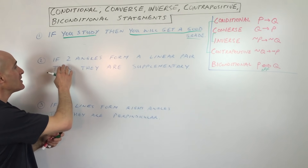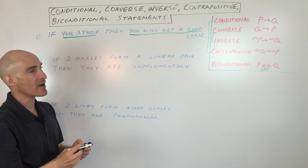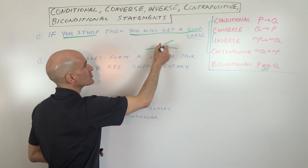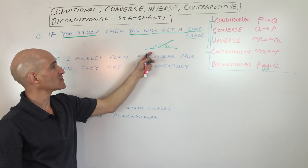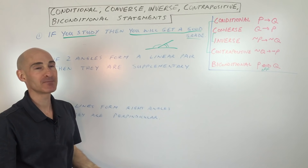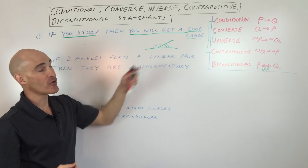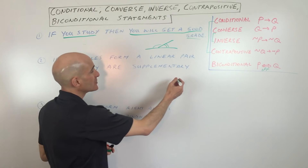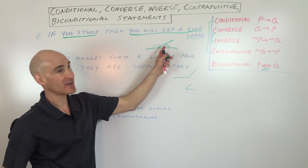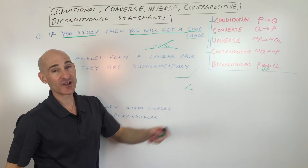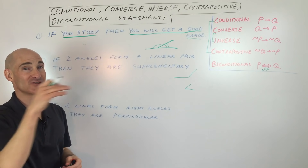Here's a math example: 'If two angles form a linear pair, then they are supplementary.' A linear pair means two angles that form a line, and supplementary means they add up to 180 degrees — so that's true. The converse would be: 'If two angles are supplementary, then they form a linear pair.' That's not necessarily true — you could have one angle over here and one over there, not adjacent, not sharing a vertex and a ray, so they're not forming a line. That's an example of the converse error.